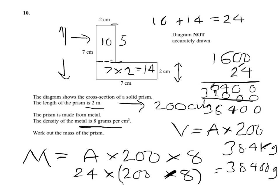Just to add, if you weren't quite sure what you're doing, the actual solid would have looked like this, where the depth, this dimension here, was 2 meters or 200 centimeters. So that's exactly what you've been doing - you've worked out the volume of that solid and multiplied the centimeters cubed by 8 to get the mass.